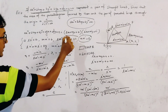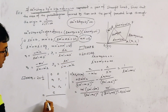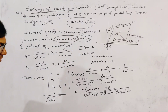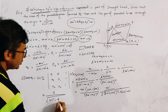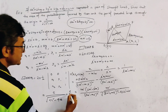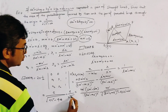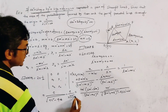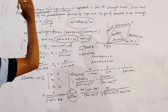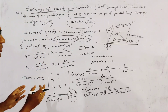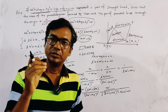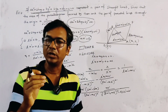Substituting lm' + ml' = 2h and ll'·mm' = ab, we get the area as c / (2√(h² − ab)), which simplifies to c / √(h² − ab). This is the required area of the parallelogram. This is a very simple but very important problem of pair of straight lines. Thank you very much.